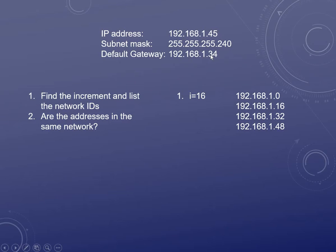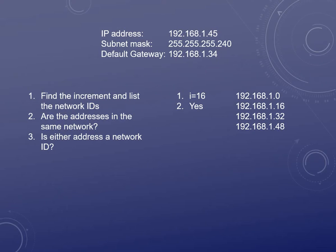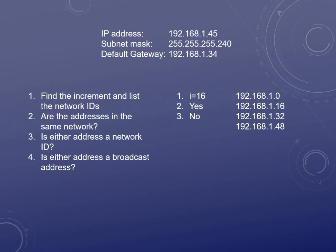Now let's see if everything is valid. Are 192.168.1.45 and 192.168.1.34 in the same subnet? Do both of them fall between the same numbers? Yes, they do — both fall between 32 and 48. Is either one of them a network ID? No, we have 45 and 34, so we're good. Is either one of them a broadcast address — one number before the next network ID, which would be 47 or 31? No. So this configuration is valid — that IP address can talk to the default gateway and get out to the internet.